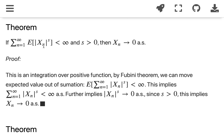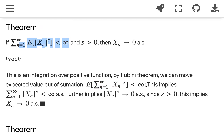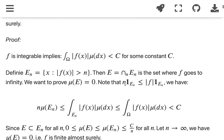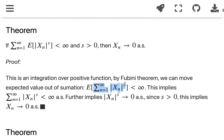To prove that, it's easy to see that expectation is an integral, and summation is also an integral. What we are doing is integrating over a positive function, so we can apply the Fubini theorem to exchange — to move the summation into the expectation. This tells us that the condition implies the integral of the summation is finite, which tells us that the summation of |x_n|^s is finite almost surely.